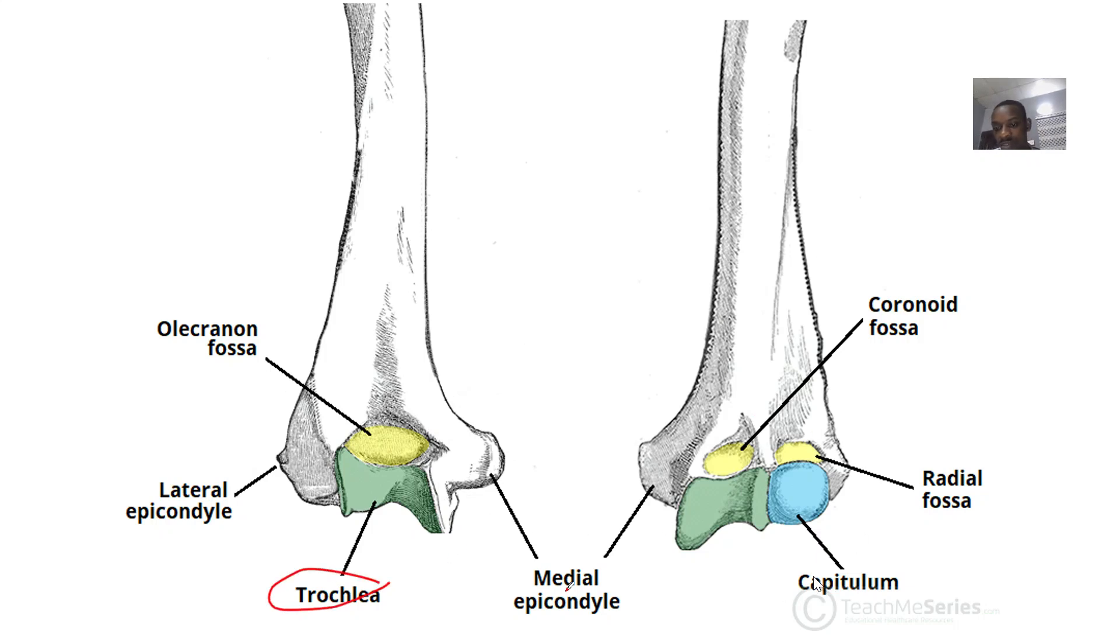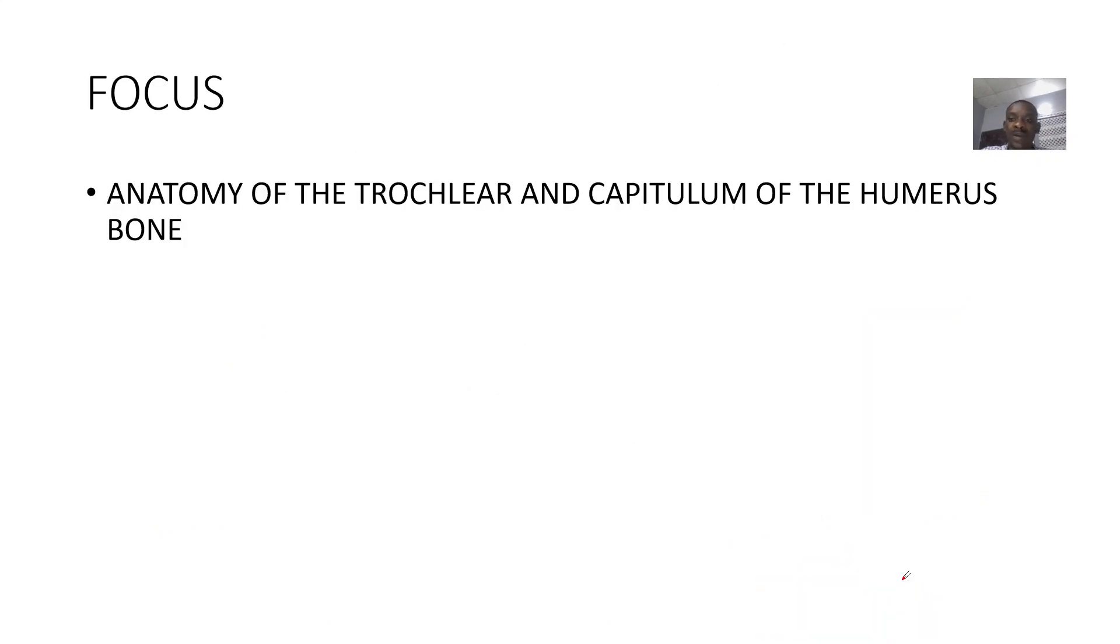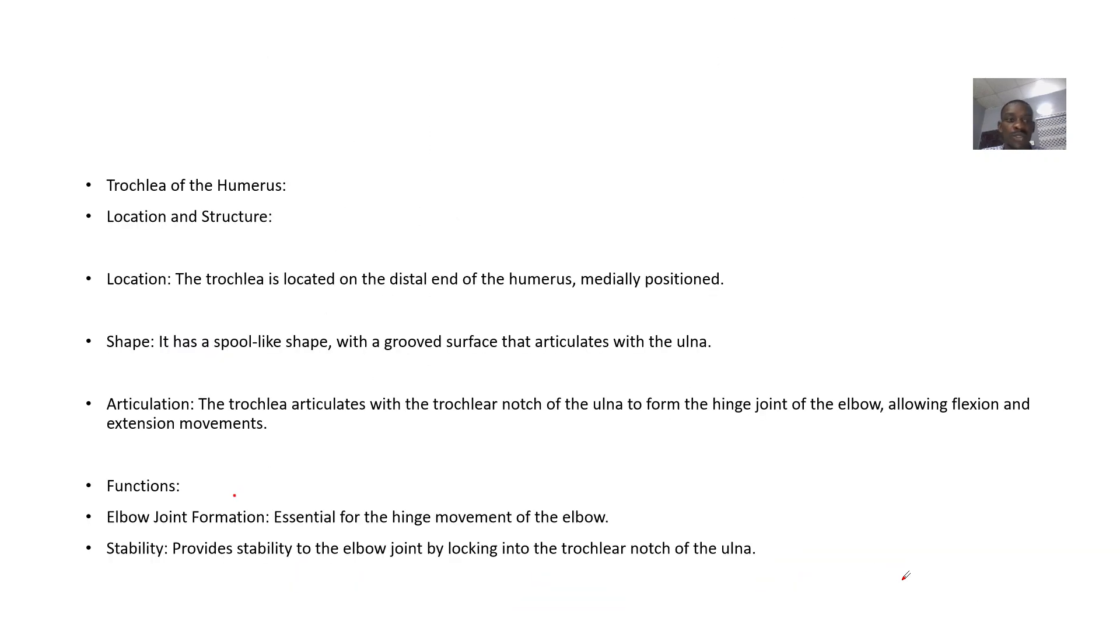known as the trochlear and the capitulum. These are the two parts of the humerus bone that we're going to look at. We'll start by looking at